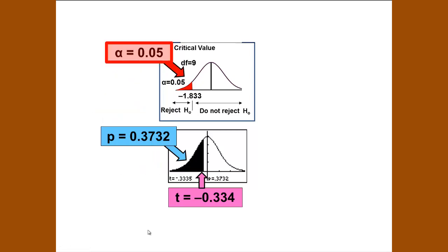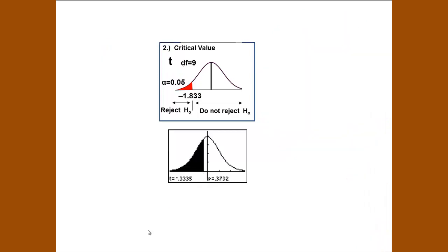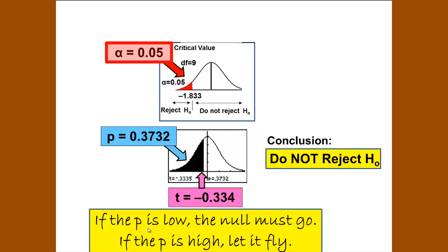The alpha is 0.05. The data's t-value has a left tail larger than the alpha, so the t-value falls in the do not reject H₀ region. Conclusion: our p = 0.3732, our alpha = 0.05, our t-value = -0.334. Conclusion: do not reject H₀ or null. If the p is low, the null must go. If the p is high, let it fly.